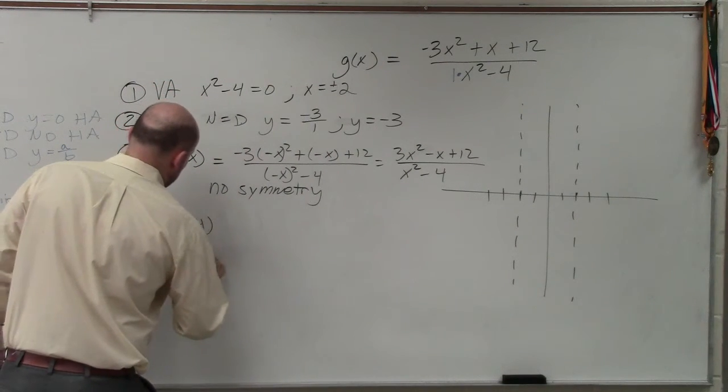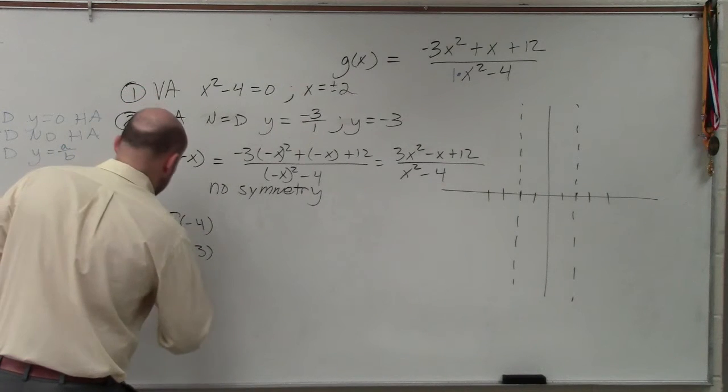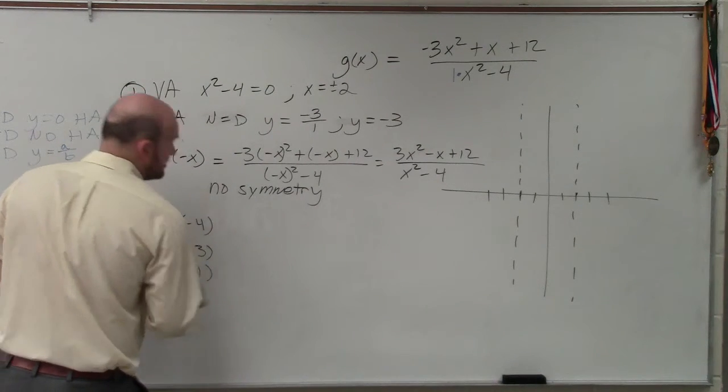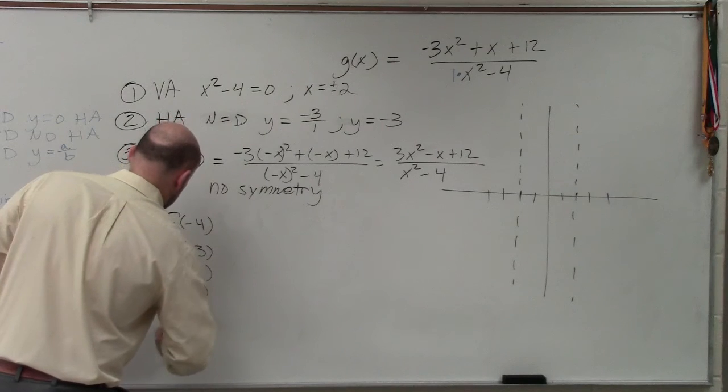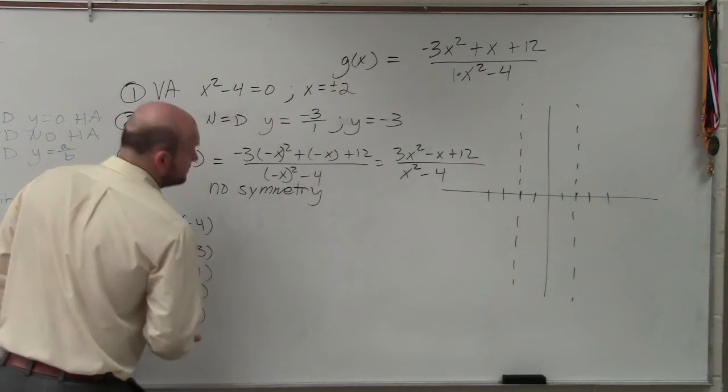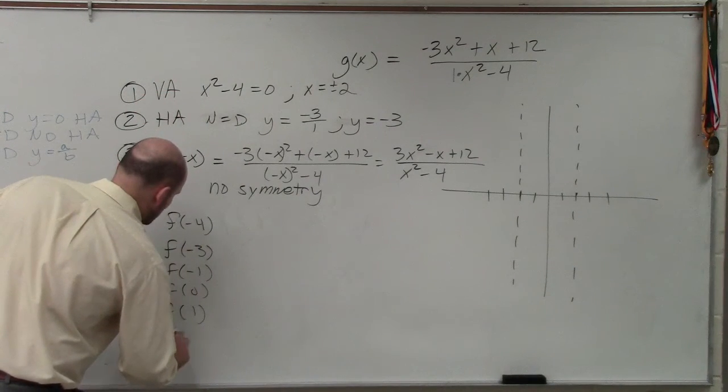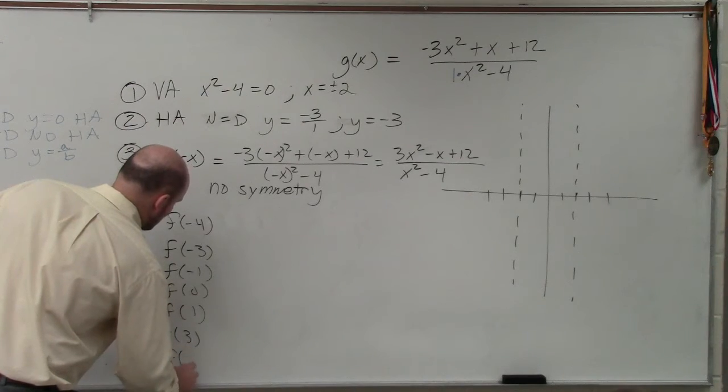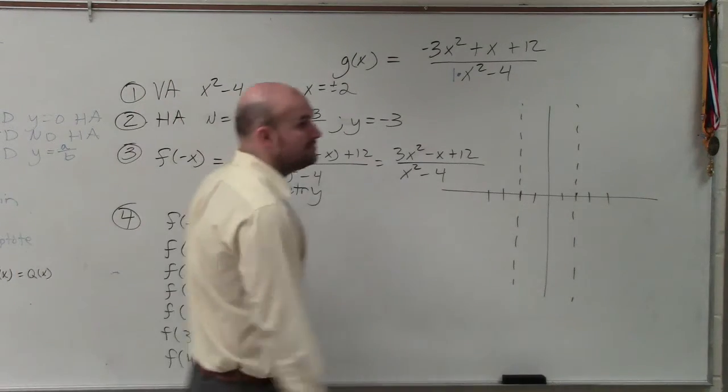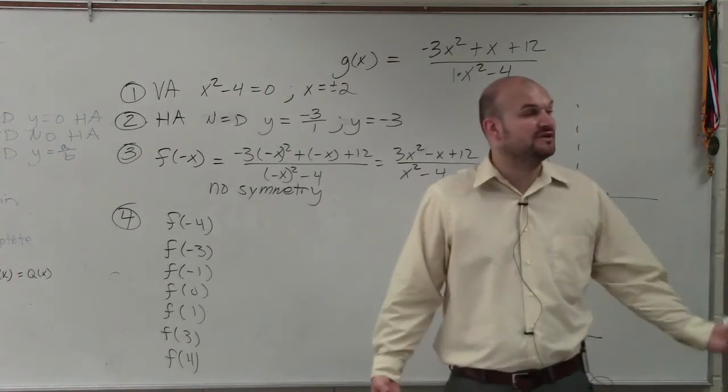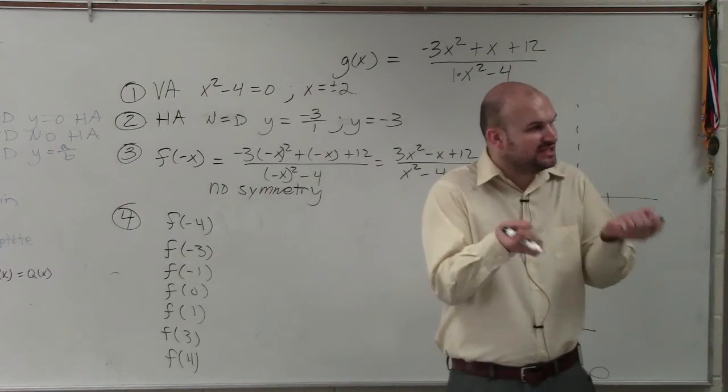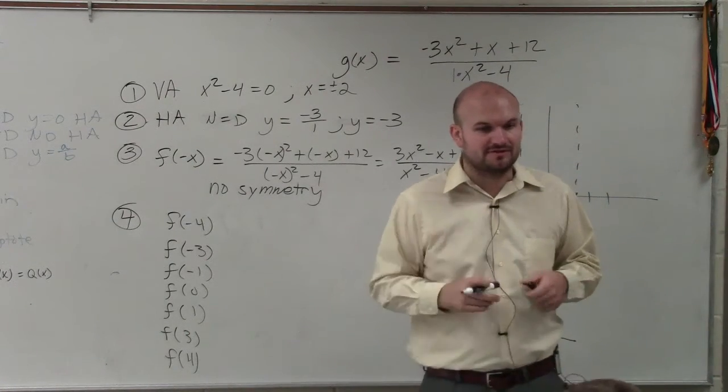So I would evaluate for f of negative 4, f of negative 3, I'll do f of negative 1. The middle is always kind of difficult. So I'll do f of 0, f of 1, f of 3, and f of 4. You're still going to want to show me what these points are. Even if you have a calculator, I'm going to still need to see at least what exactly is one point to the right or to the left.